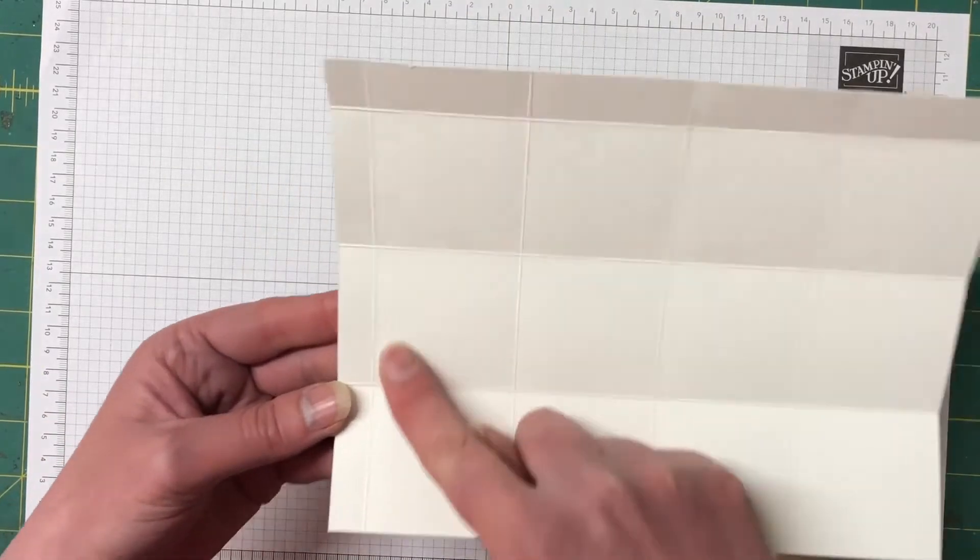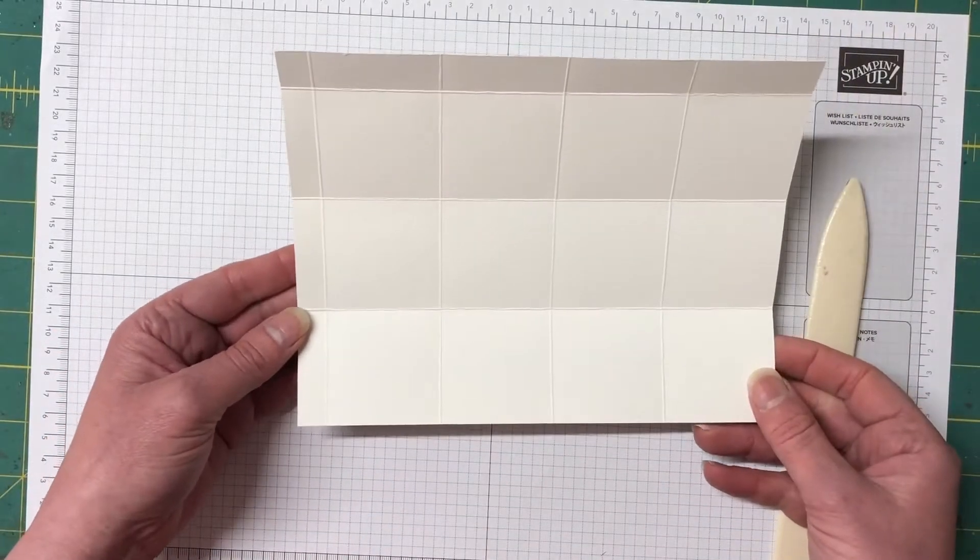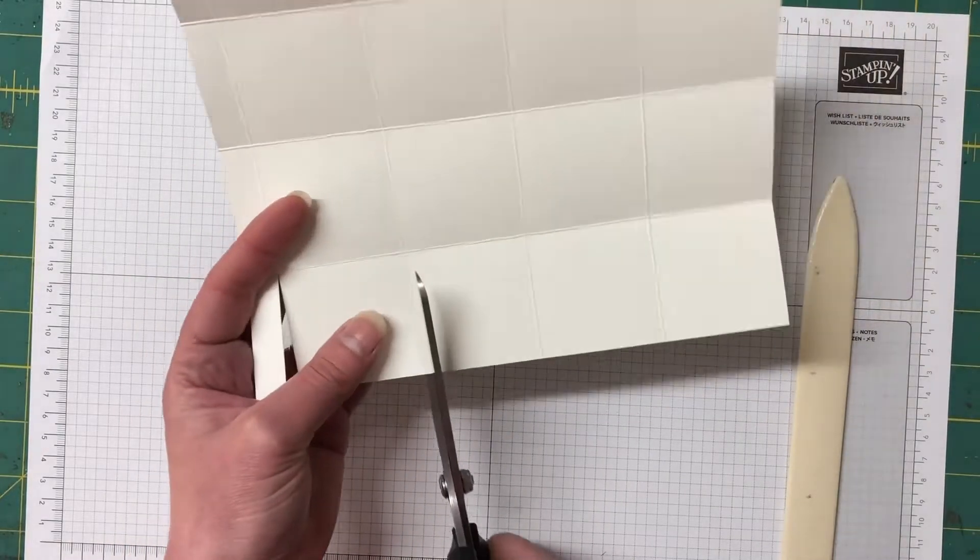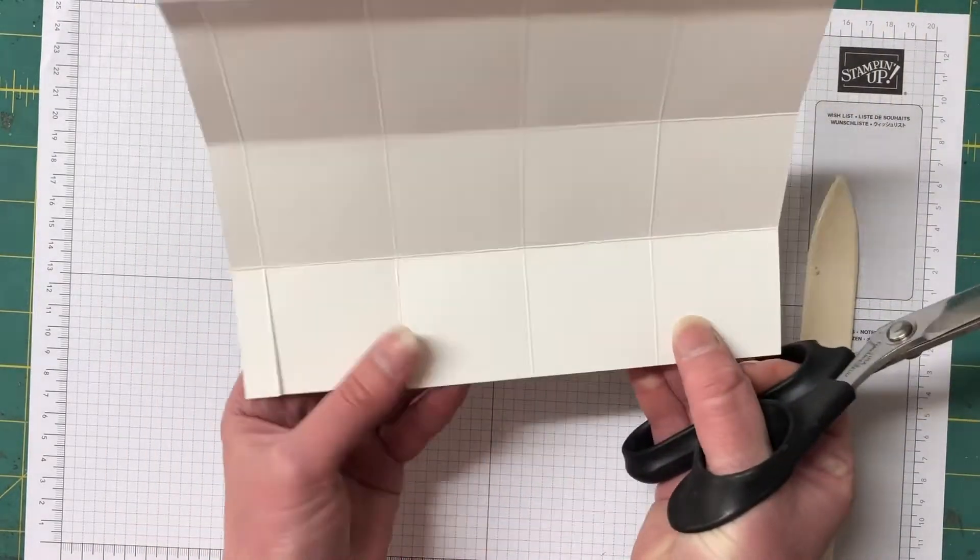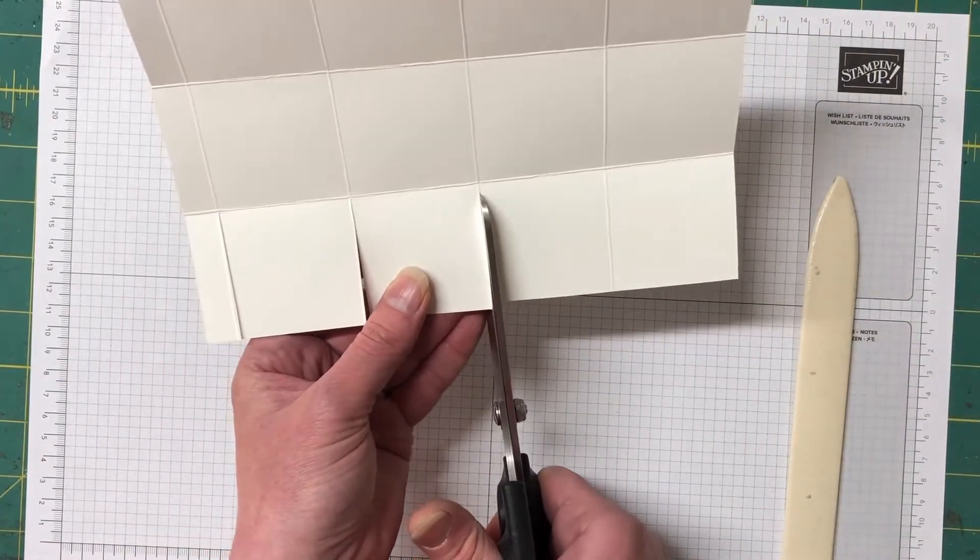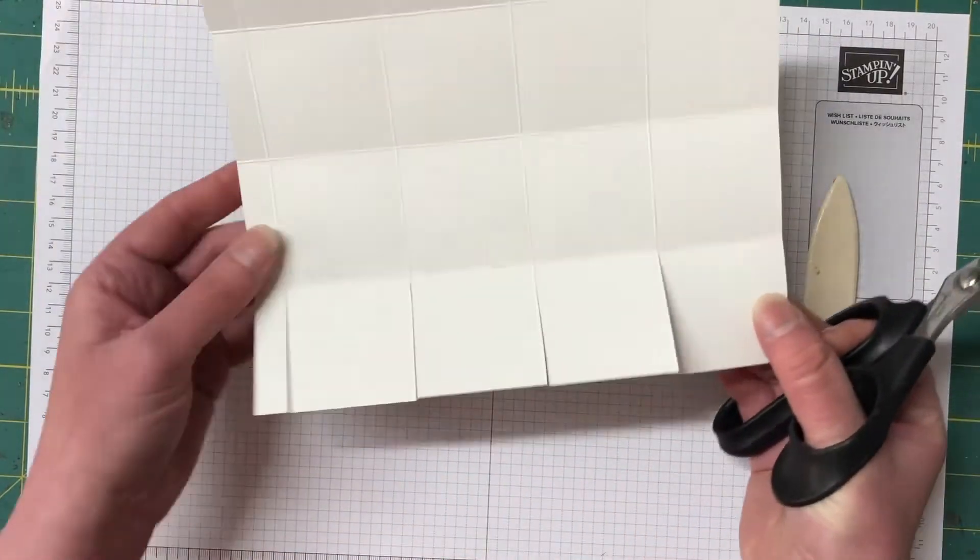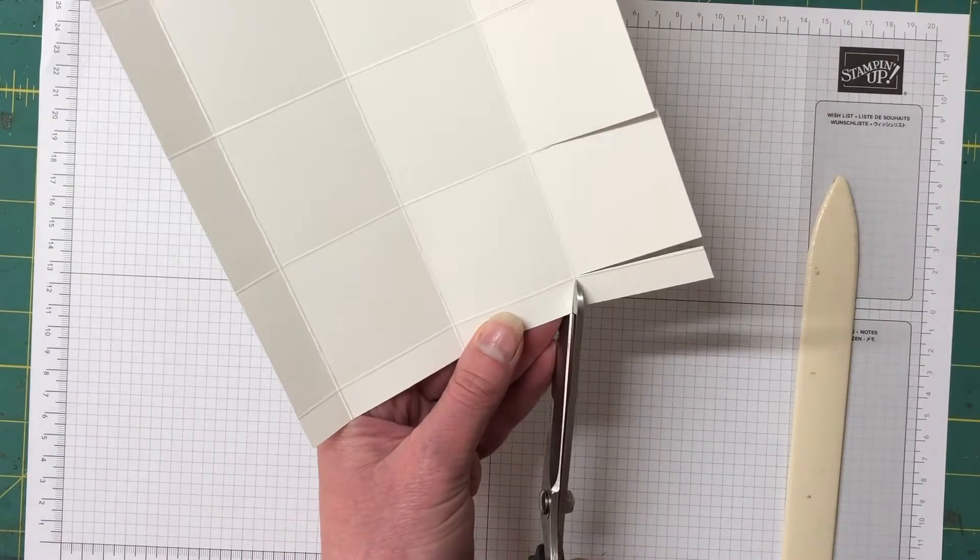We're going to start with our cutting now. I'm using the tab on the left hand side and the other smaller tab on the top. We're going to cut up every score line on the bottom up to that first score line. Now you can see that little tab on the very left hand side that's going to come completely off and we're going to do a miter cut on that one.